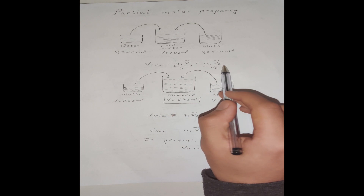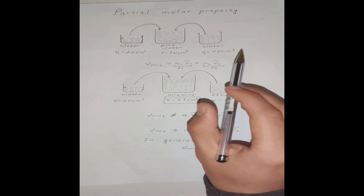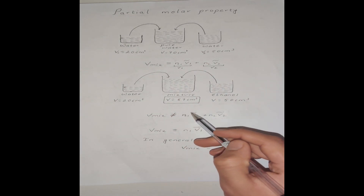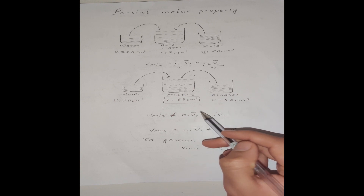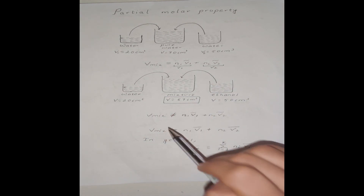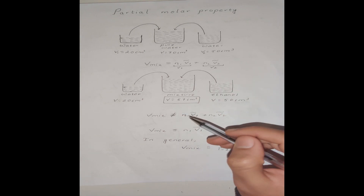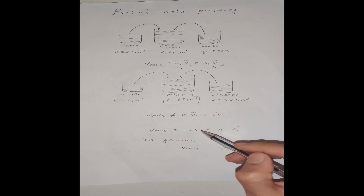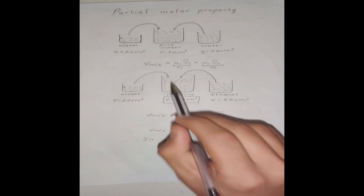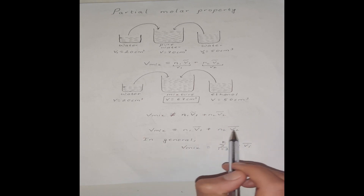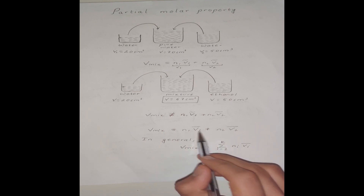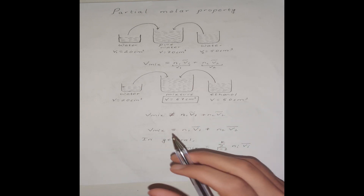In engineering calculations we want to have an equation similar to this to calculate the total volume of the mixture. In other words, we have to come up with a quantity different from the molar volume of the pure component so that this additive property holds. To do that we can replace Ṽ₁ with another term V̄₁, and if we replace V₁ and V₂ with V̄₁ and V̄₂ then this additive property is going to hold true. This V̄₁ and V̄₂ is what we call the partial molar property.